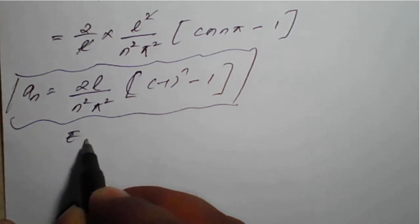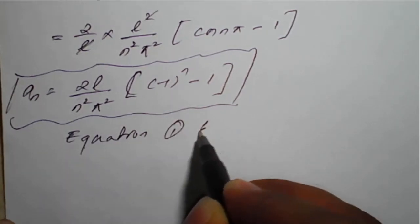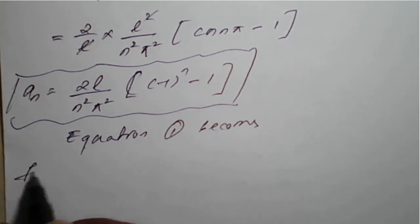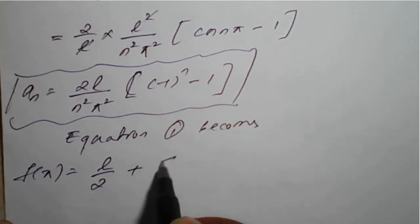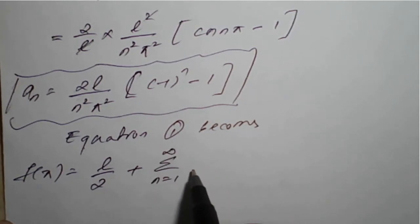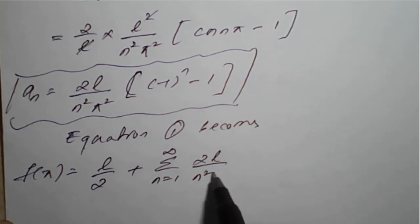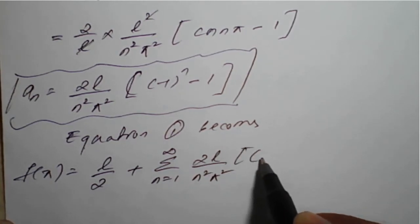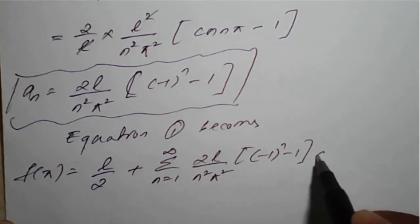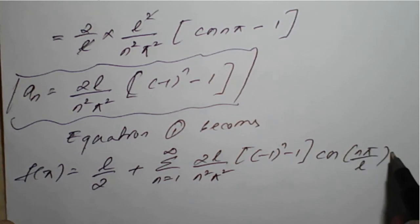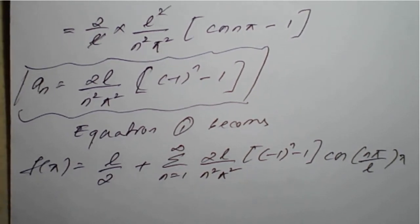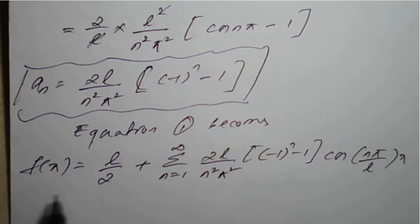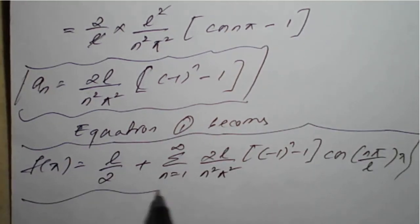Substituting into equation 1, the Fourier series becomes: f(x) = l/2 + Σ(n=1 to ∞) [2l/(n²π²)] · ((-1)ⁿ - 1) · cos(nπx/l). This is the required Fourier series of the given function f(x) = |x|.